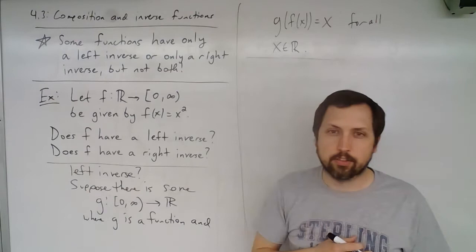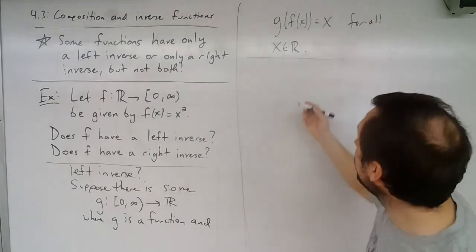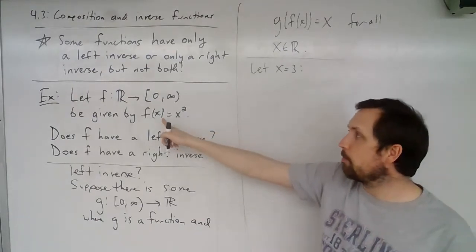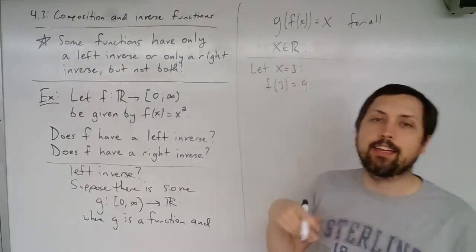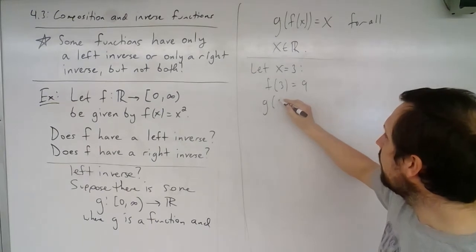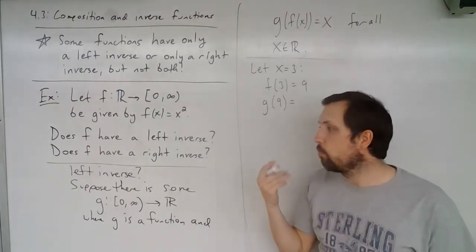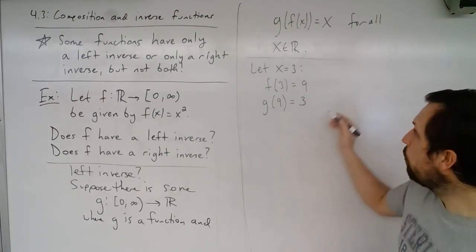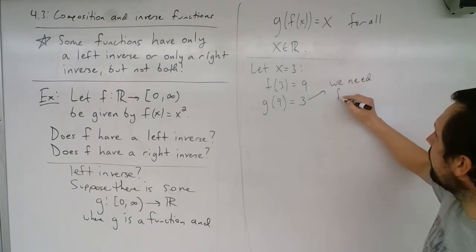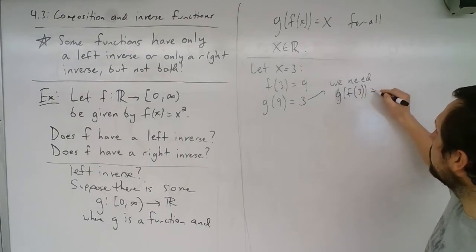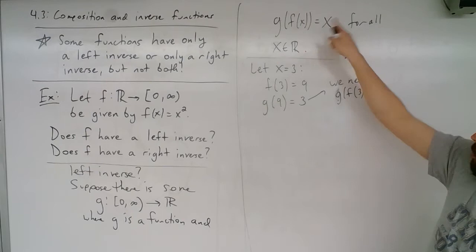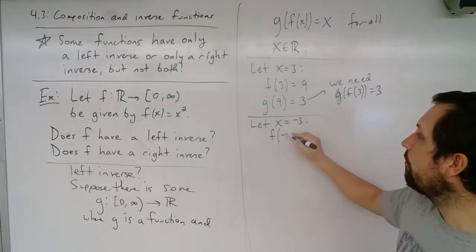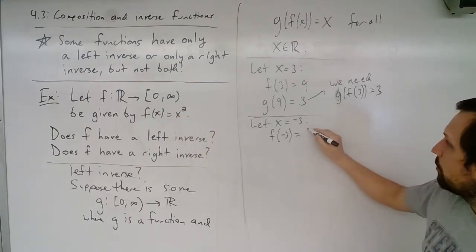Let's check with some numbers. If we let x equal 3, then f of 3 equals 9. So g of 9 must equal 3, because we need g of f of 3 to equal 3. Now if we let x equal negative 3, then f of negative 3 also equals 9.